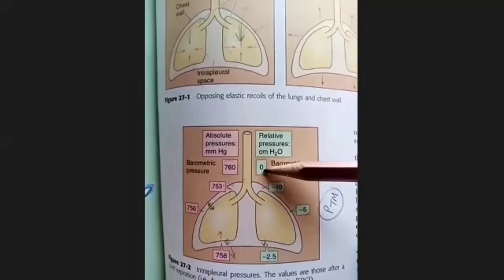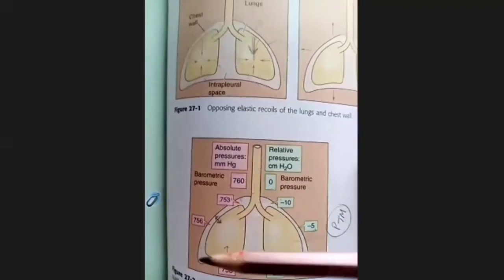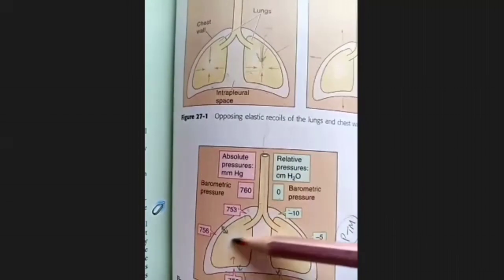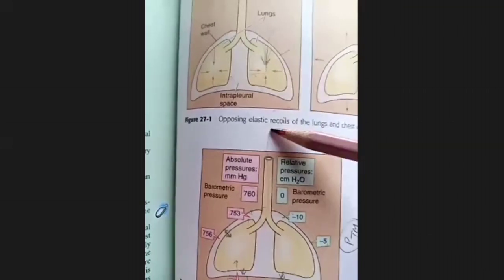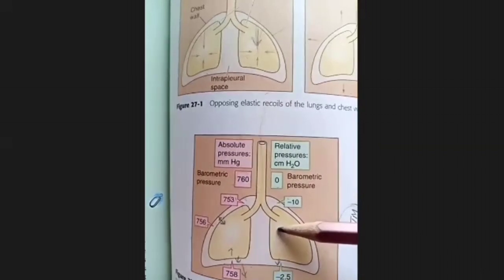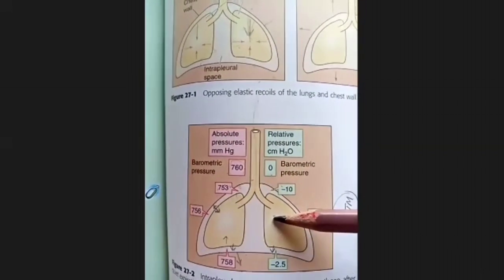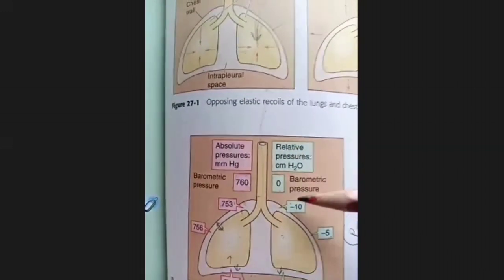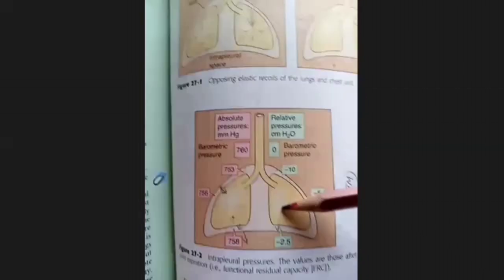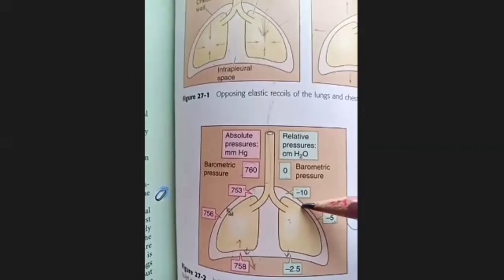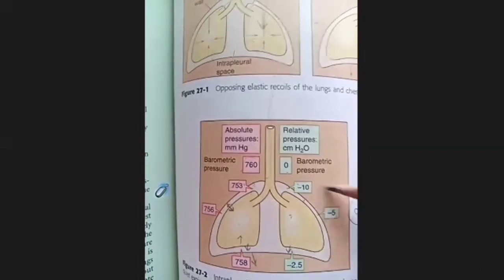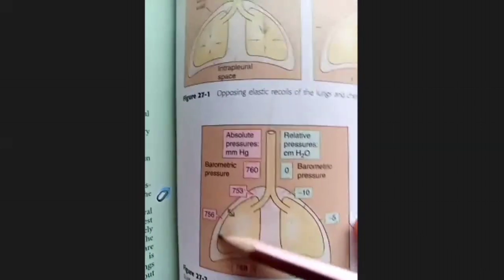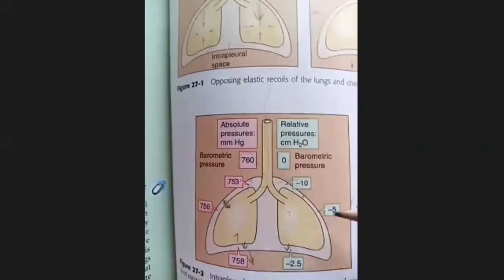In centimeters of water, this is called zero centimeters of water — this is your barometric pressure. When our glottis is open and air is freely moving from the atmosphere through the trachea into the lungs, pressure will be equal. This means when we are neither breathing in nor breathing out, the pressure inside the lungs — called intra-alveolar pressure — is the same as atmospheric pressure: 760 mm Hg, or 0 cm of water. As I mentioned, the intrapleural pressure will be negative. In the middle part, the average value is 756 mm Hg, or minus 5 cm of water.